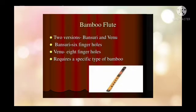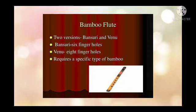Bamboo Flute. It has two versions: bansuri and veena. Bansuri has six finger holes and veena has eight finger holes. A flute is made up of a specific type of bamboo. It is of two versions — bansuri and veena — where bansuri has six finger holes and veena has eight finger holes.